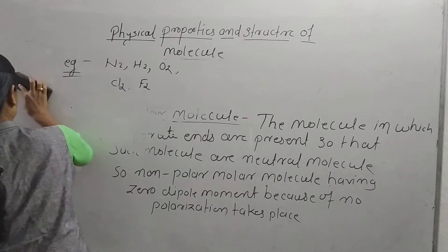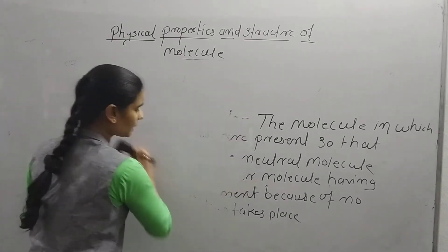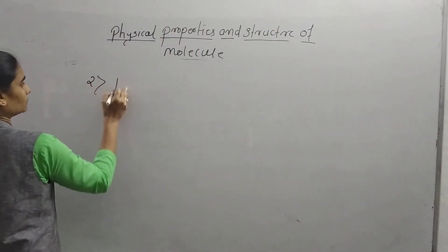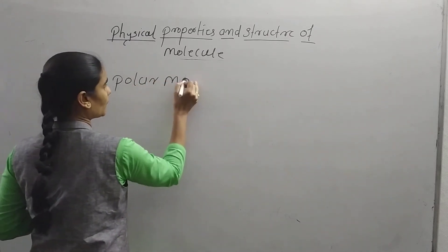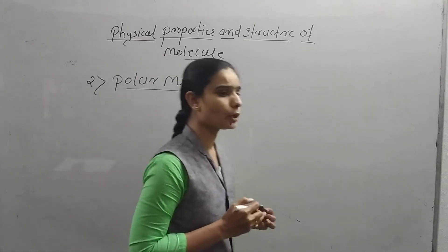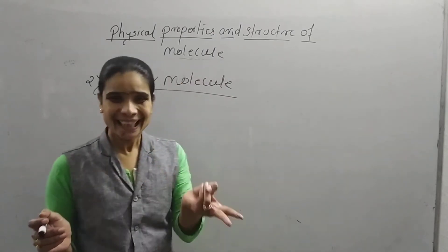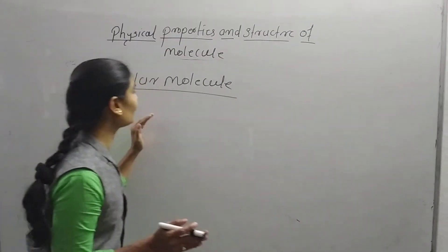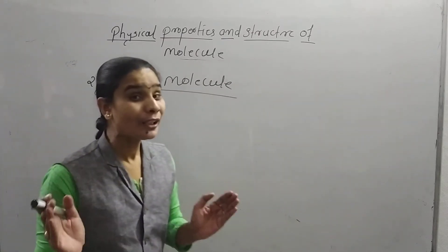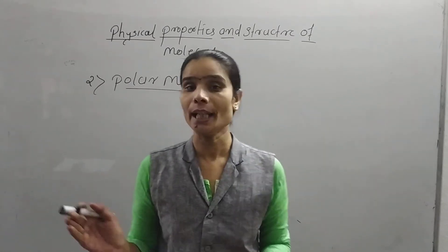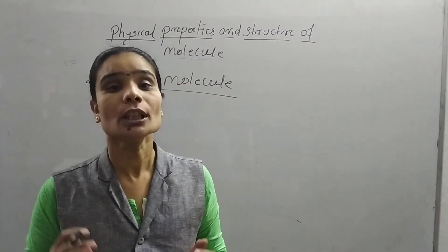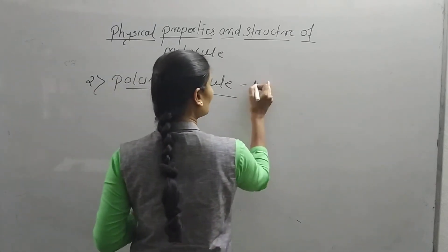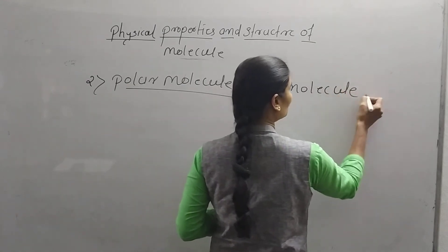Now the second type is polar molecules. Polar molecules are opposite to nonpolar molecules. Polar molecules are those in which two separate ends or two separate charges are present — a positive charge and a negative charge. Such molecules are called polar molecules.